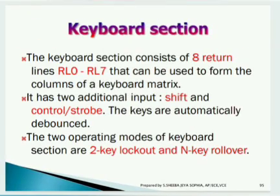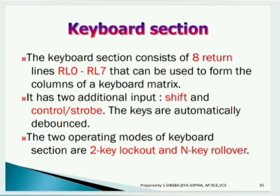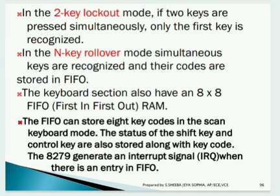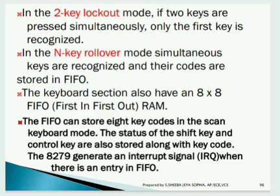The keyboard section consists of 8 return lines RL0 to RL7, which form the columns of the keyboard matrix, along with two additional input pins: shift and control. The keys are automatically debounced. There are two operating modes: two-key lockout and N-key rollover. Two-key lockout detects which key is pressed first when two keys are pressed simultaneously. N-key rollover recognizes simultaneously pressed keys and stores their codes in the FIFO registers. The keyboard section has an 8x8 FIFO, giving priority to the first pressed key.